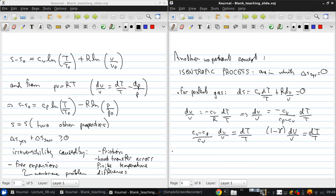Now if we integrate, we get 1 minus gamma log of v2 over v1 equals log of t2 over t1.